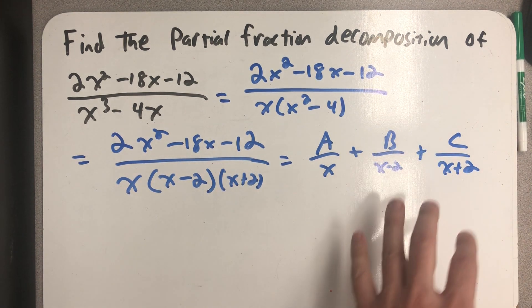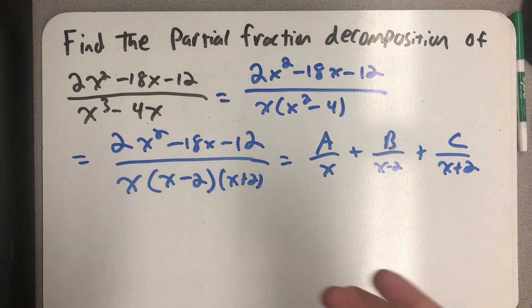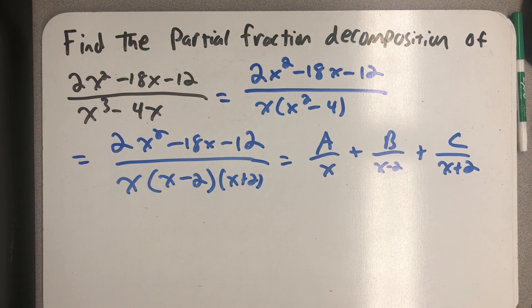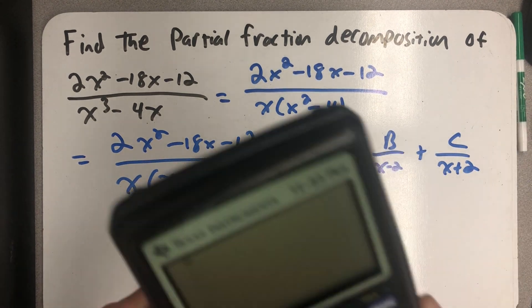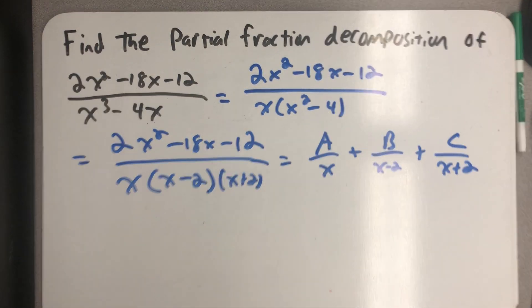I'm going to multiply both sides by the bottom, see what cancels and then write a system of linear equations in the variables A, B and C that I'm going to solve this time using the matrix features on my calculator.